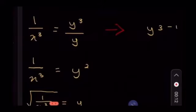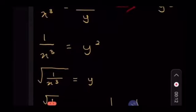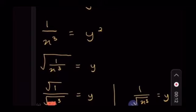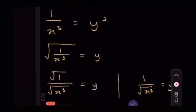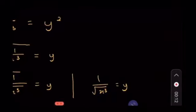Seterusnya, 1 per X kuasa 3 sama dengan Y kuasa 2. Kuasa 2 kita pindahkan ke sebelah kiri akan jadi punca kuasa 2. Punca kuasa 2 dari 1 per X kuasa 3. Maka punca kuasa 1 sama dengan 1, manakala punca kuasa X kuasa 3 ia tidak akan berubah apa-apa. Jadi kita hanya perlu kekalkan punca kuasa X kuasa 3. Maka jawapan akhirnya kita akan dapat 1 per punca kuasa X kuasa 3 sama dengan Y.